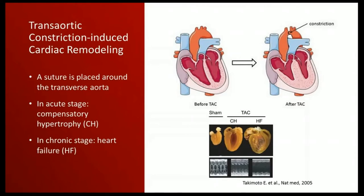In the heart failure stage, occurring in the chronic phase after induction of constriction, the heart increases in size but function is massively deteriorated. In our study, we used these two time points — compensated hypertrophy stage and heart failure stage — to address whether there is a difference in the pattern or severity of ventricular arrhythmia between these two stages.